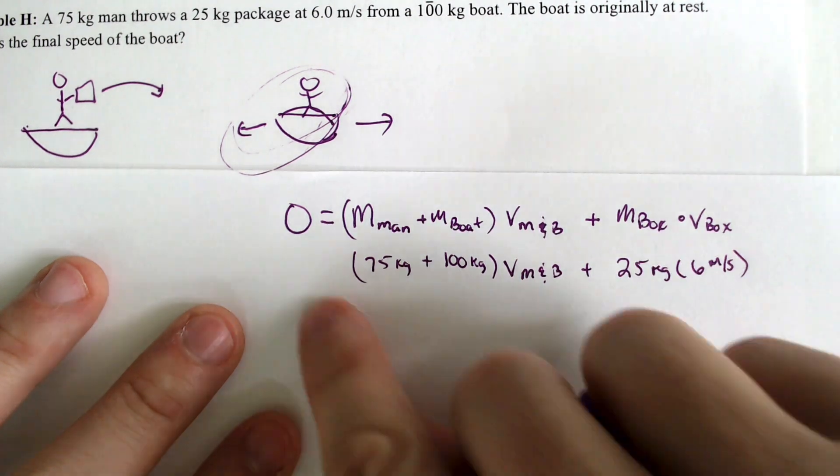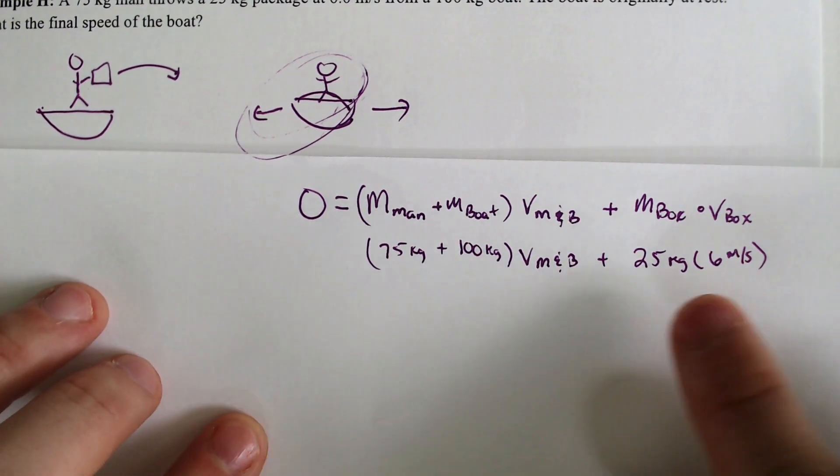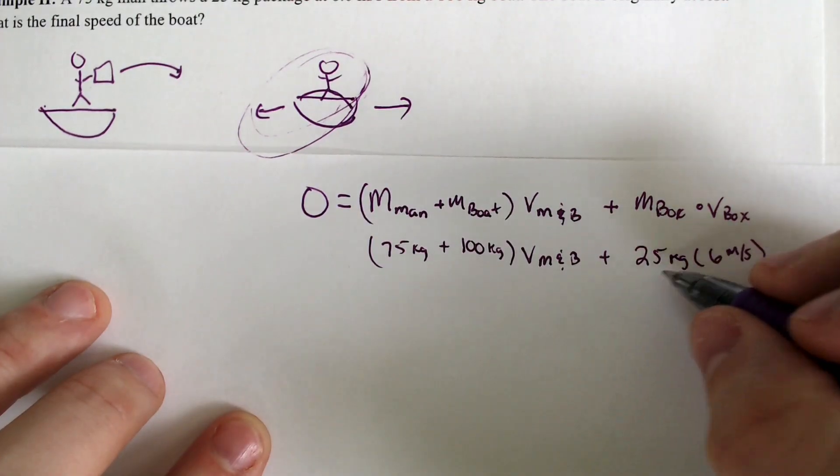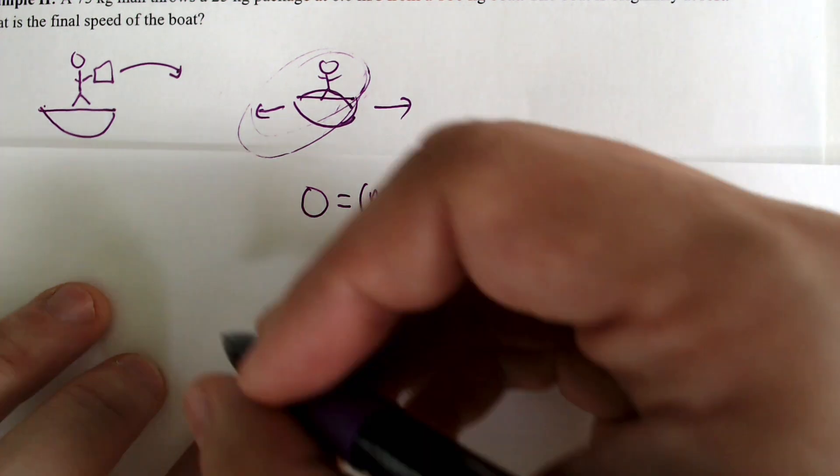So if we move this stuff around, we would be able to solve for the velocity of the man and the boat. So if we do 6 times that, let's move it over.